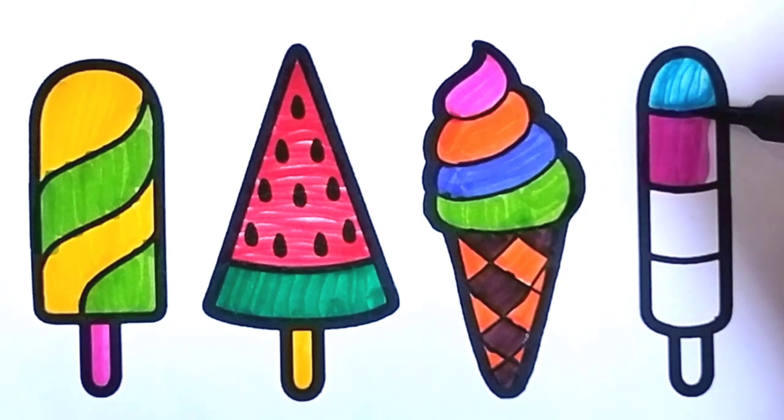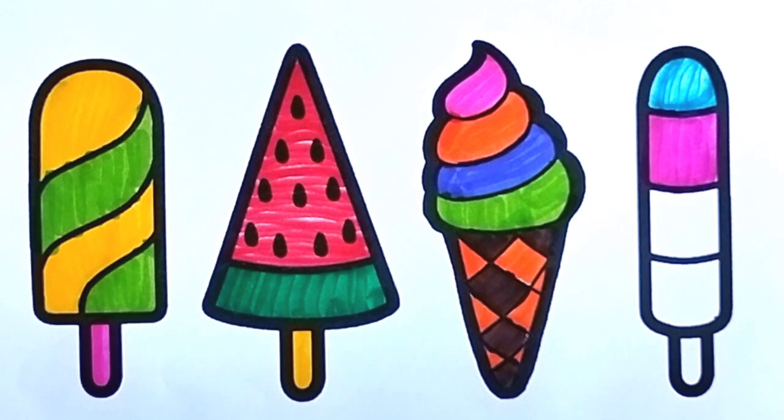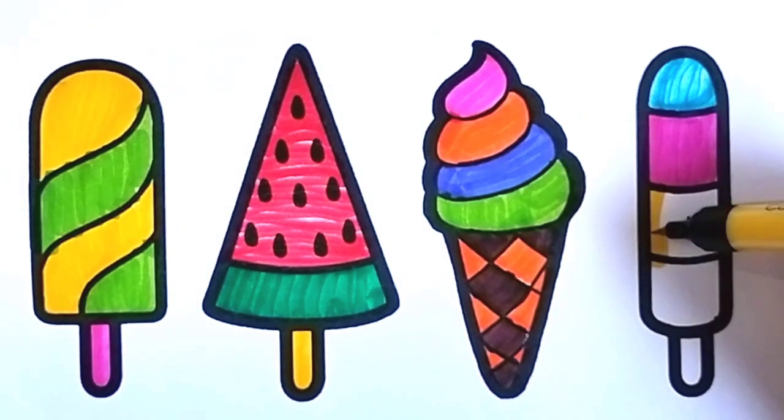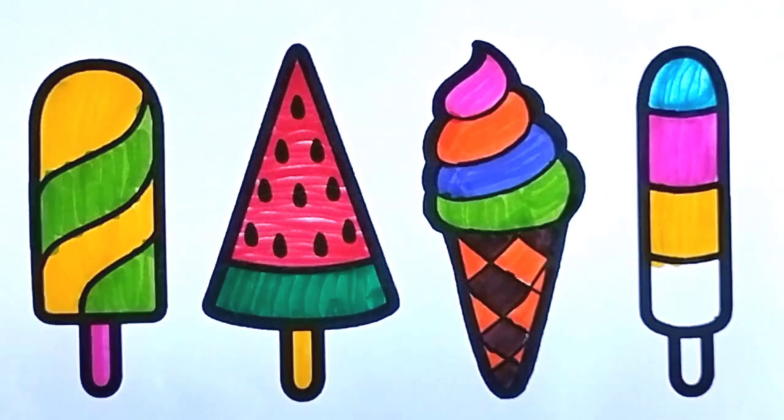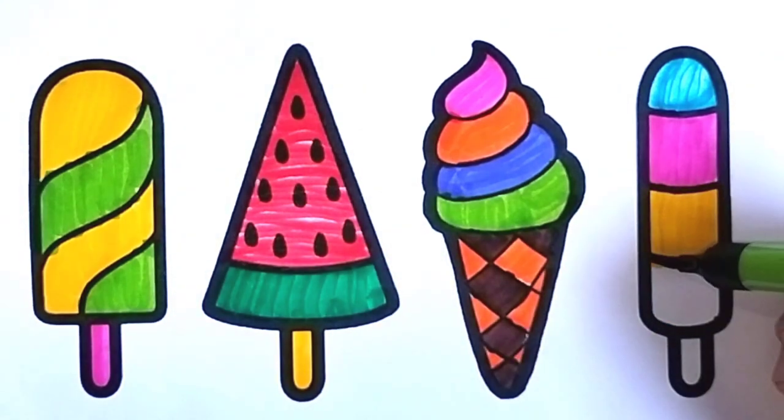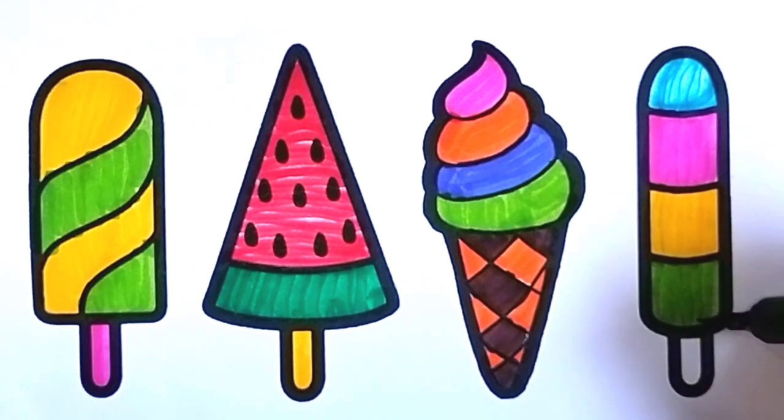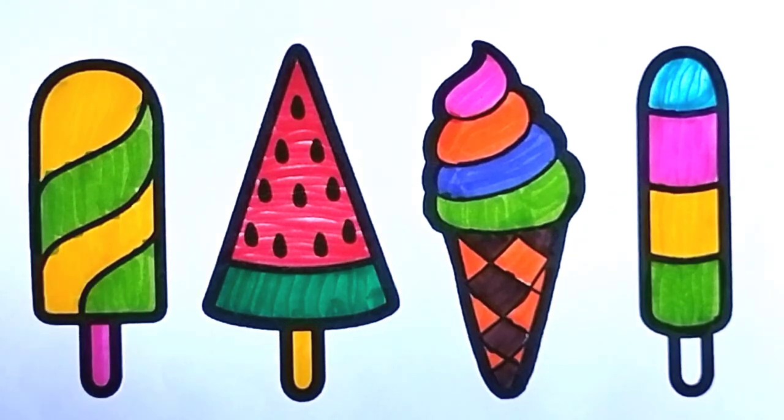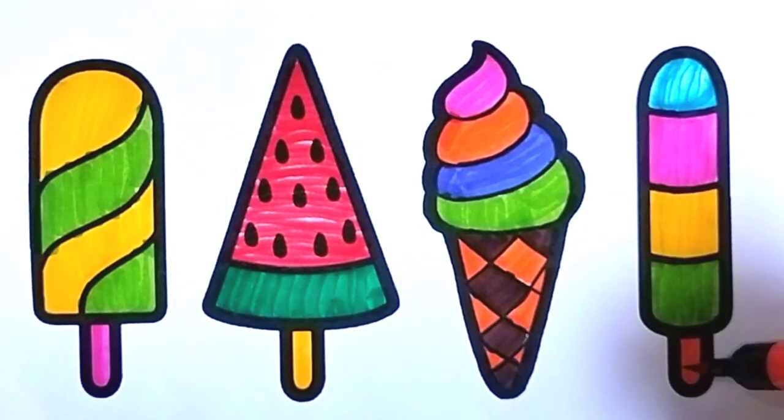A-tisket, a-tasket, a green and yellow basket. I wrote a letter to my love and on the way I dropped it. Dropped it, I dropped it, and on the way I dropped it. A little boy he picked it up and put it in his pocket.